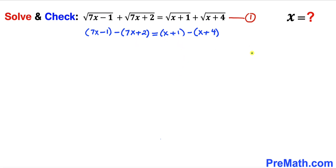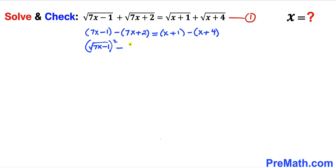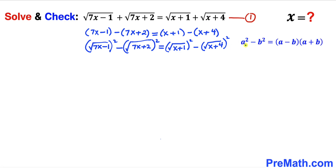Before we proceed, note that any value x can be written as (√x)² without changing anything. We are going to apply this property to our equation, so 7x minus 1 can be written as (√(7x minus 1))², and 7x plus 2 can be written as (√(7x plus 2))², and likewise for the right-hand side terms.